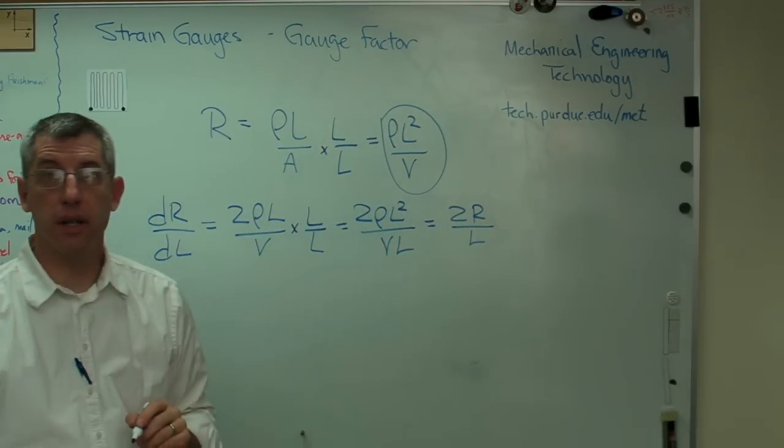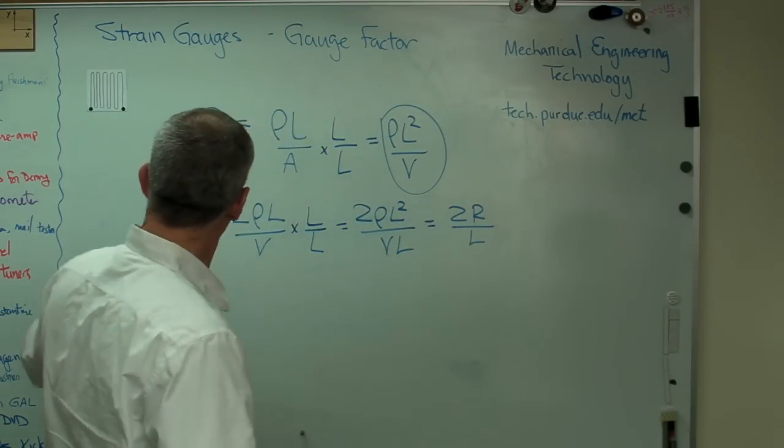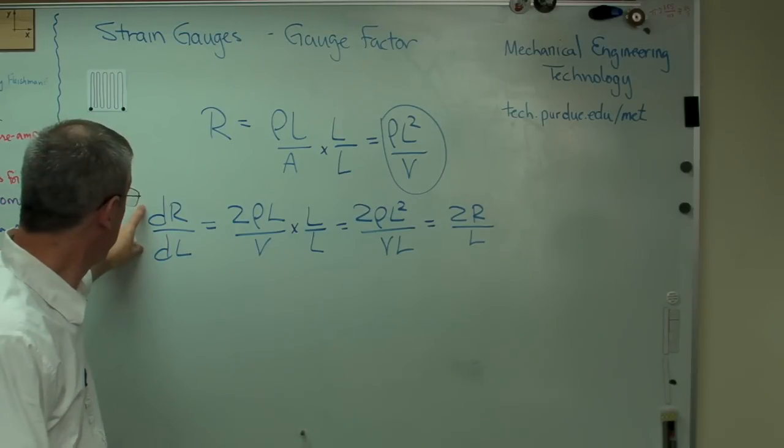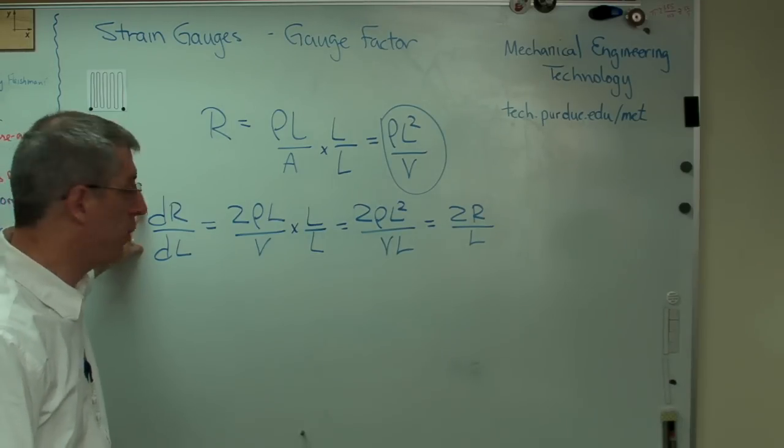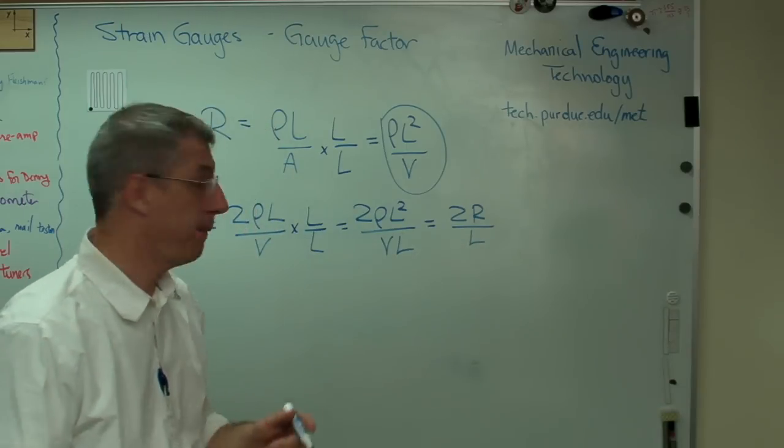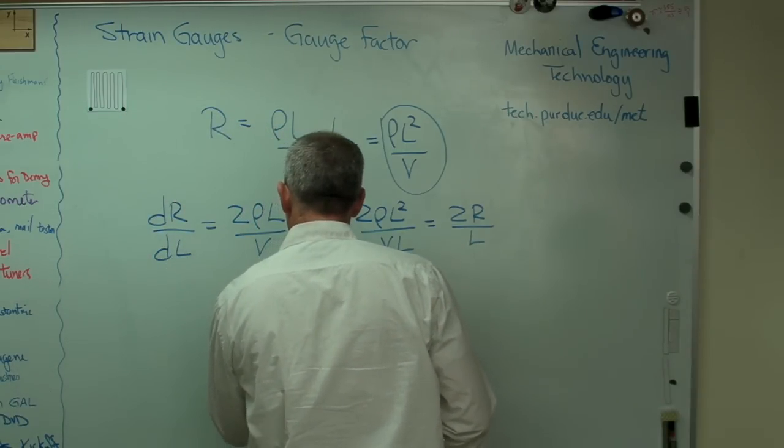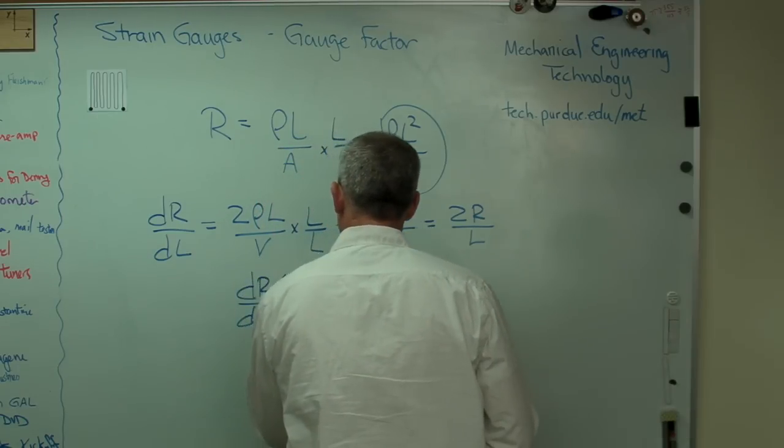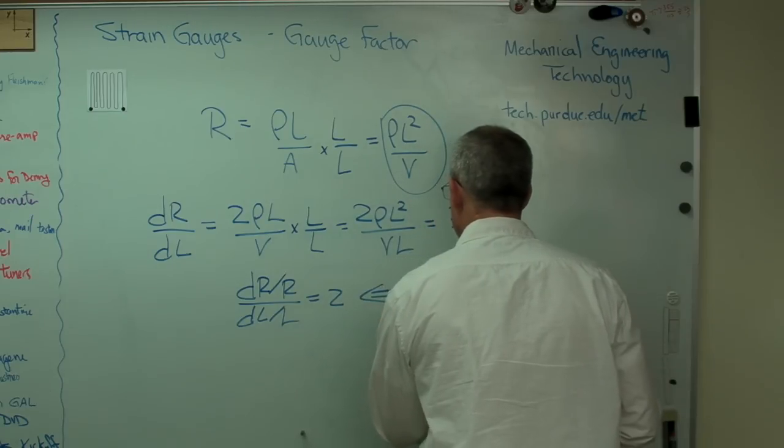Now it's starting to look a lot more useful, this expression right here. Now, I told you I wanted that number. I wanted change in resistance divided by change in length of the wire. I'm going to make one small change to make this a little more useful. I'm going to divide by the R and I'm going to divide by L. So I'm going to get DR over R divided by DL over L. And that equals two. This thing right here is usually called K and that's the gauge factor.